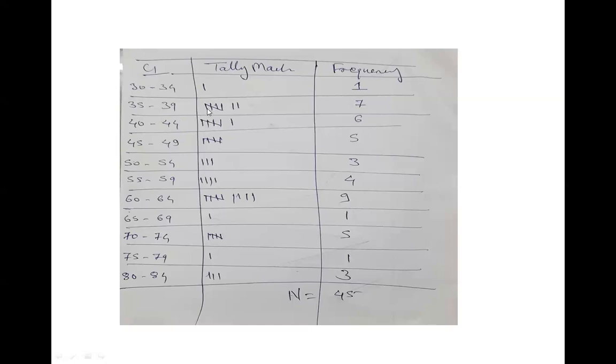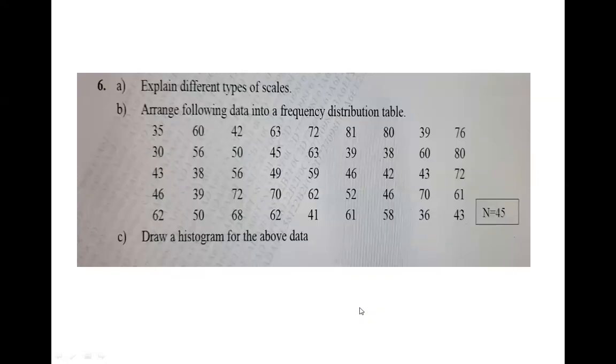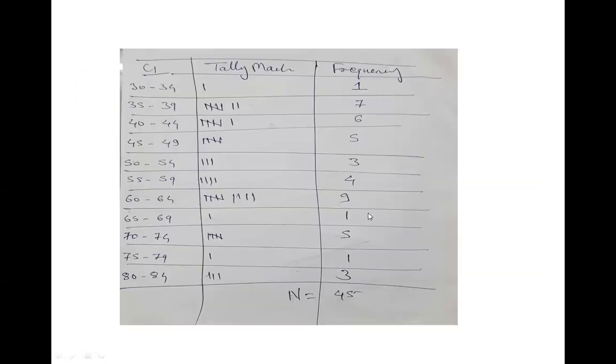So there are total seven numbers: one, two, three, four, five, six, and seven. Similarly for 40-44, 45-49, and so on. Then you have calculated all frequencies. The total items are 45, so if your sum equals 45, it means your frequency distribution table is correct. That way you can make your frequency distribution table.